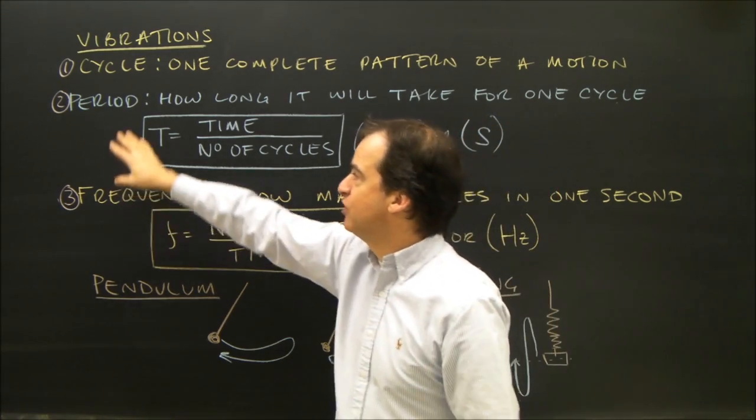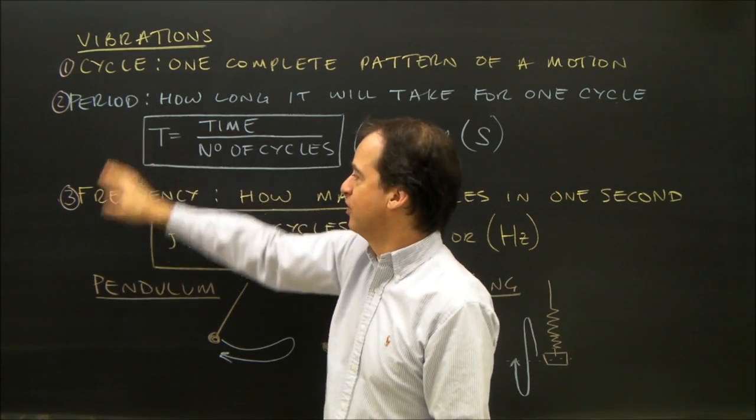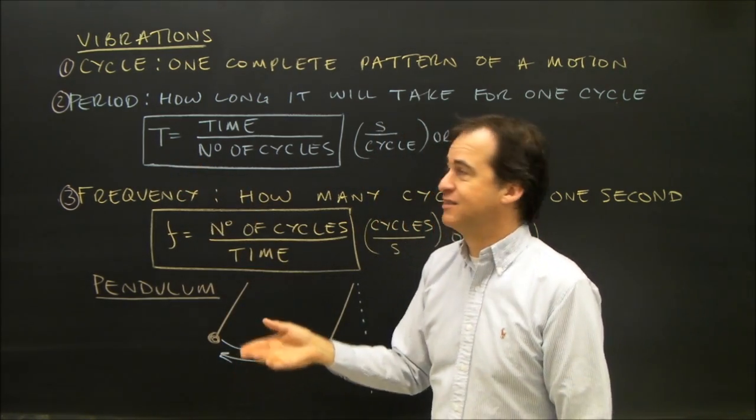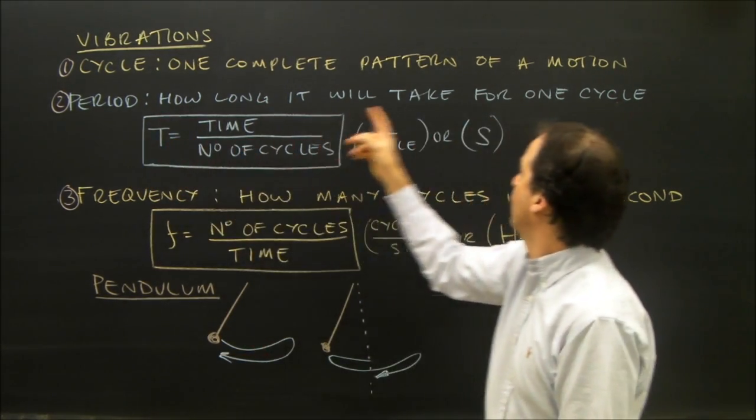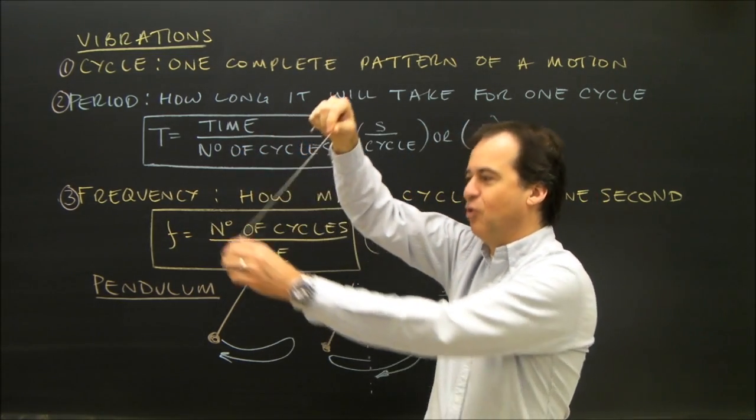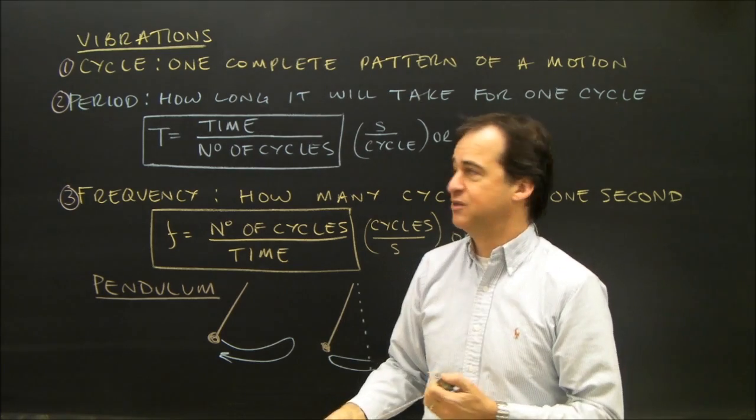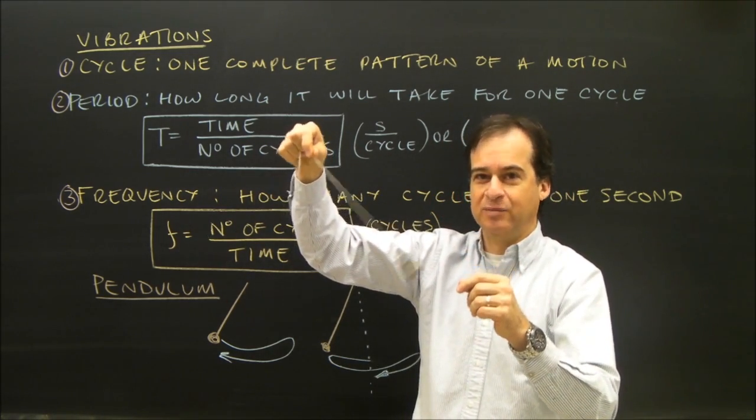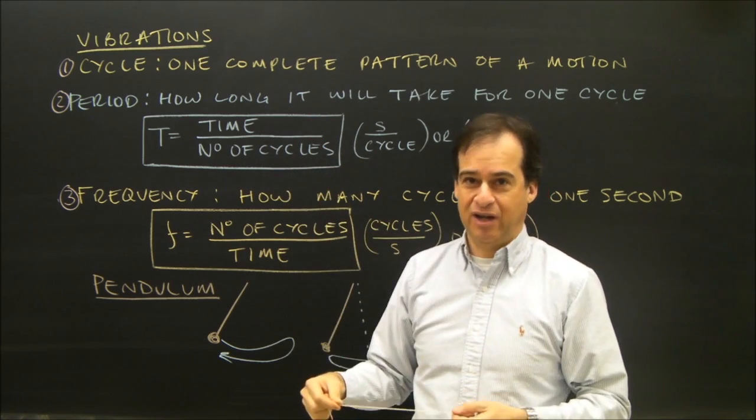The two words you need to know that use cycle are period and frequency. There are two different ways of looking at basically the same thing. Period is how long it will take for one cycle. So, in seconds, how long does it take to go back and forth once? You can calculate that by swinging a pendulum back and forth a number of times, let's say five times,